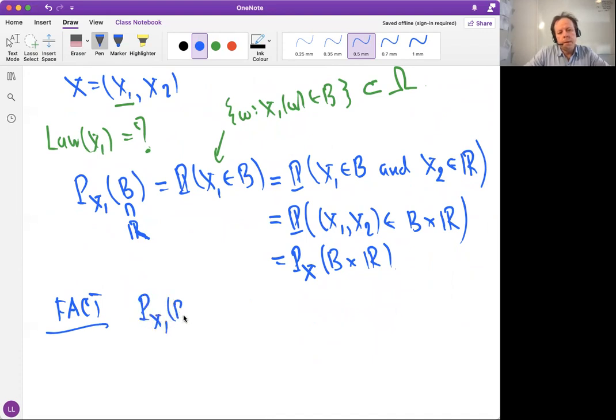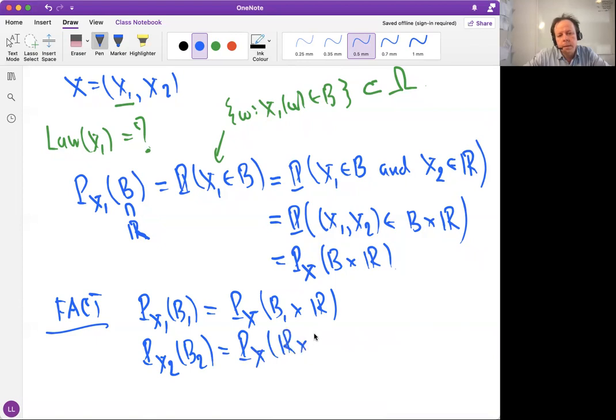So maybe we should summarize this. Let's call it a fact. P_{X₁}(B₁), if you give me any B₁, we can calculate it from the joint law. In this way, we write B₁ times the real line. And also we get P_{X₂}, the law of the second random variable, using the joint law and then real line times B₂. That's true for all B₁ in the Borel sets of the real line. And of course, that's the same thing here.